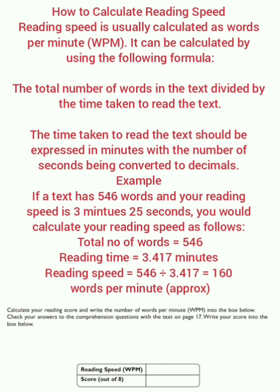How to calculate reading speed. Reading speed is usually calculated as words per minute (WPM). It can be calculated using the following formula: the total number of words in the text divided by the time taken to read the text, expressed in minutes with seconds converted to decimals. Example: if a text has 546 words and your reading time is 3 minutes 25 seconds (3.417 minutes), then reading speed equals 546 divided by 3.417, which equals approximately 160 words per minute.